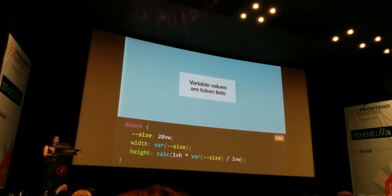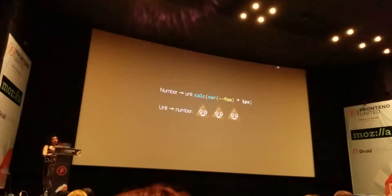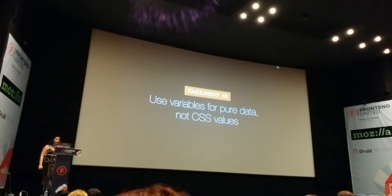The reason you can't divide by lengths is historical — when `calc` was defined, long before variables, there was no concept of 'invalid at computed value time.' The question of what to do when dividing by zero had no answer, so dividing by lengths was disallowed. If you have a number, you can convert it to a length by multiplying by `1` of that unit, but if you have a unit you cannot convert it back to a number. The sixth takeaway: use variables for pure data, not CSS values. You can always convert to the CSS value you need, but you cannot convert it back.